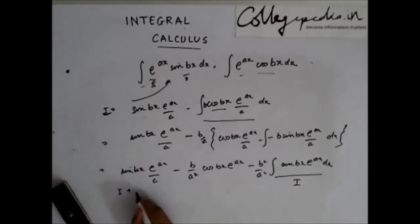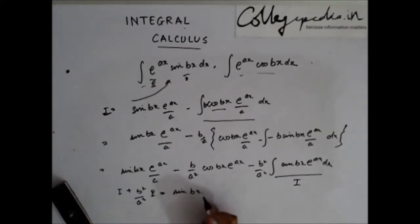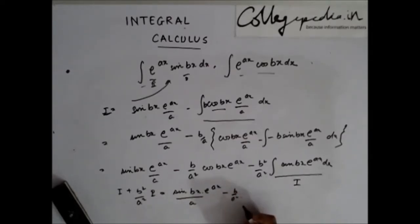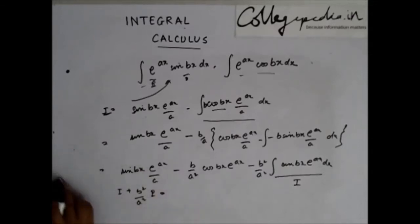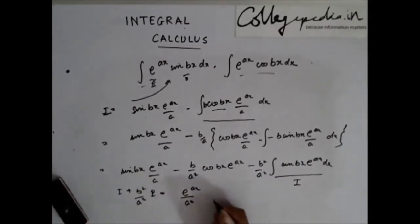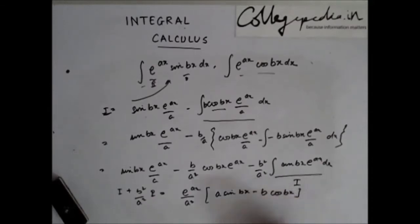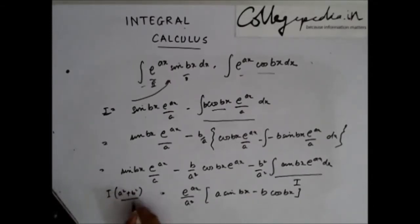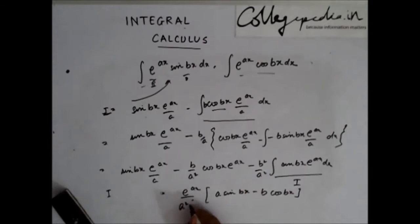That integral is nothing but I. So taking the b²/a²·I to the left side: I plus b²/a²·I equals sin(bx)·e^(ax)/a minus b/a²·cos(bx)·e^(ax). Taking e^(ax) and a² common gives a·sin(bx) minus b·cos(bx). Simplifying the left side: I·(a² + b²)/a², and cancelling a² gives I·(a² + b²) = e^(ax)·(a·sin(bx) minus b·cos(bx)).